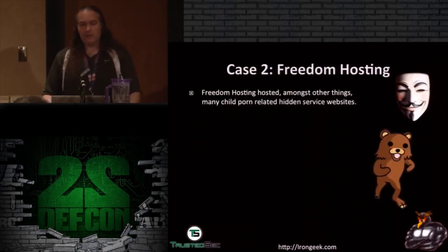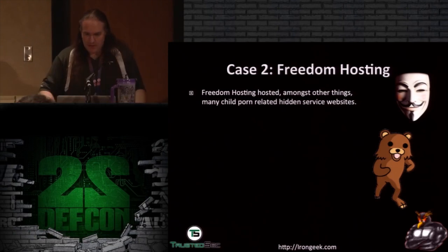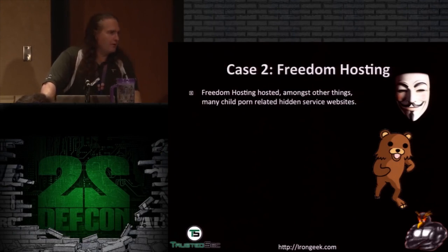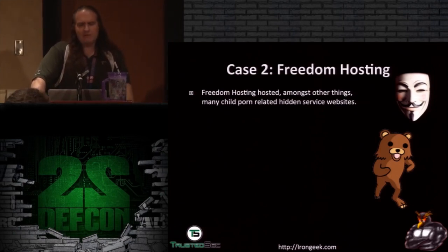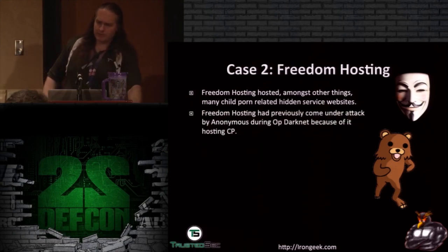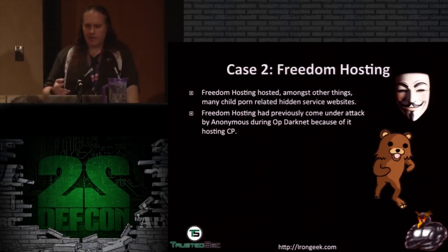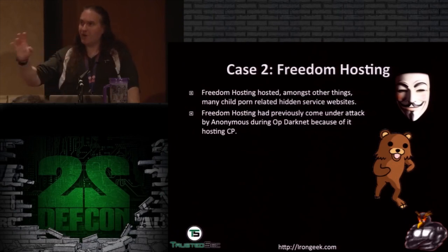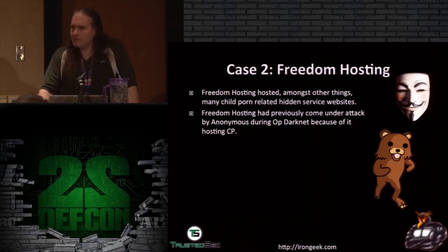Case number two — Freedom Hosting. Freedom Hosting was a company that allowed people to get hosting services inside of Tor, so they didn't have to set up their own hidden service boxes. They hosted a lot of different things — amongst them, some child pornography-related services, though they also had legitimate services like Tor Mail. Freedom Hosting had already come under attack because of hosting child porn — Anonymous had an op called OpDarknet where they were attacking them, hacking the websites, and at one point dumped information about users. Just because it's anonymous doesn't mean the web application on the other end isn't vulnerable.